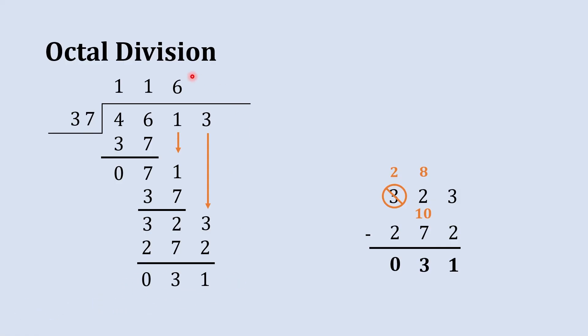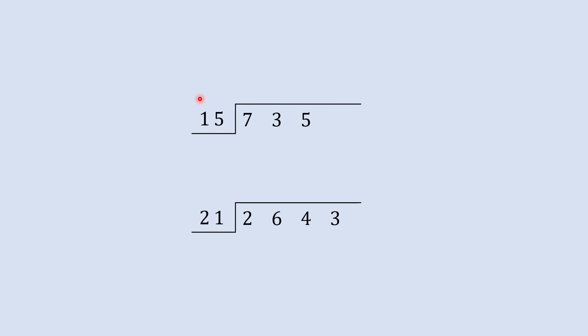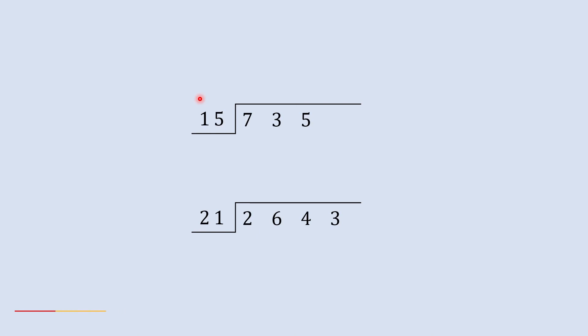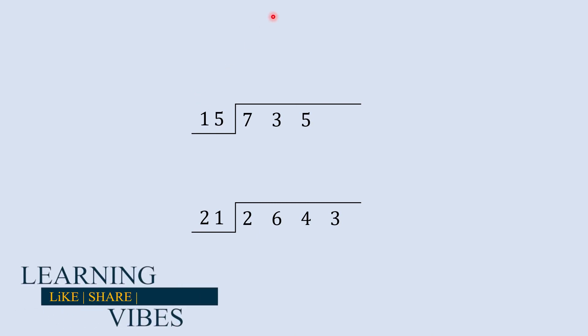All digits have been covered, so 31 is our remainder, and this is the answer to our division. That's how you do octal division. Here I'm providing two numericals for you to solve by yourself — write your answers in the comments below to check if you got the concept correct. For other videos on digital electronics, you can refer to these playlists.